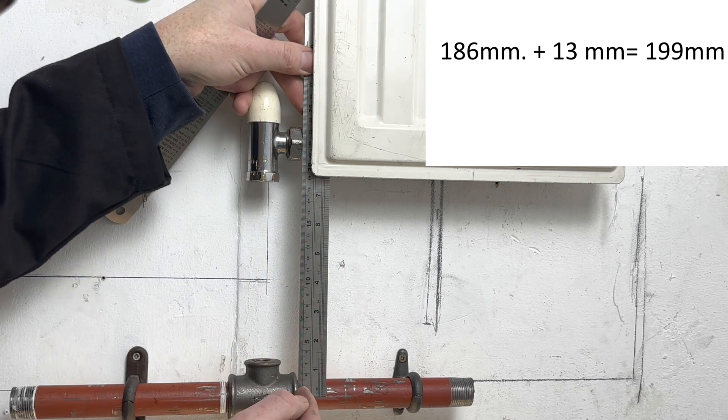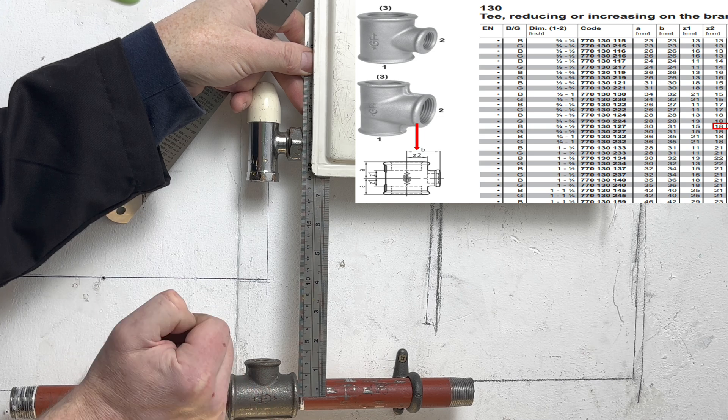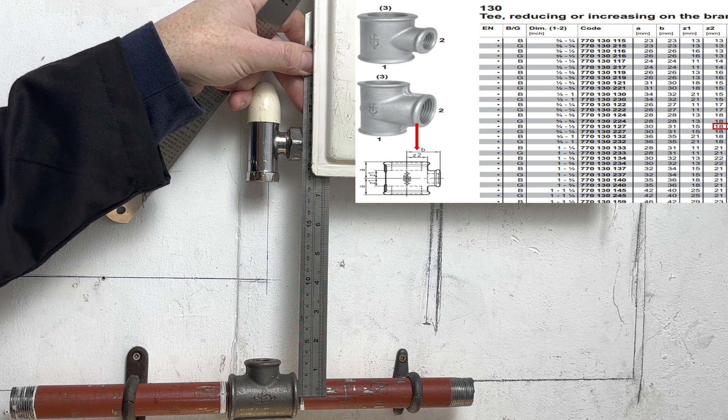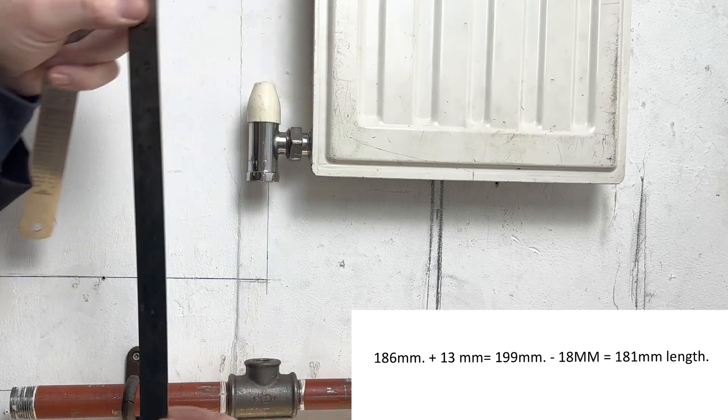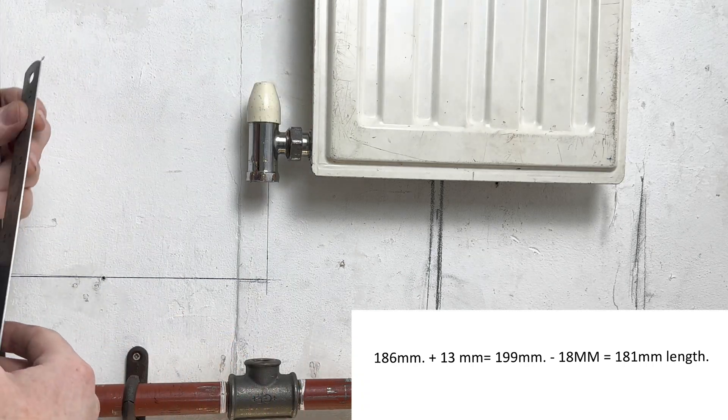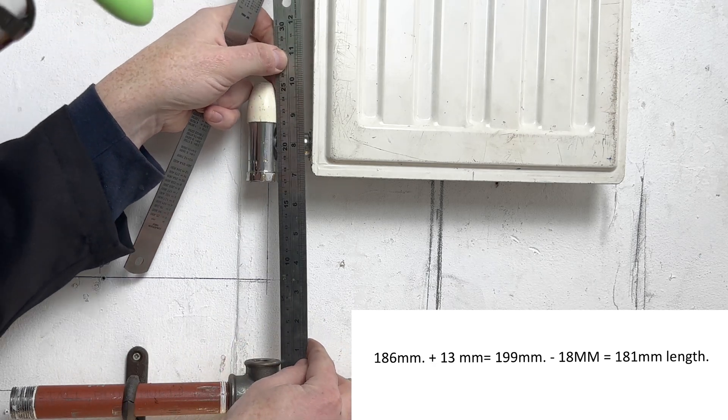And we then take off the Z dimension, from here to here, which is 18mm. So 199mm minus 18mm equals 181mm is the pipe length.